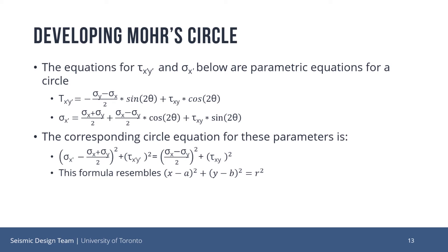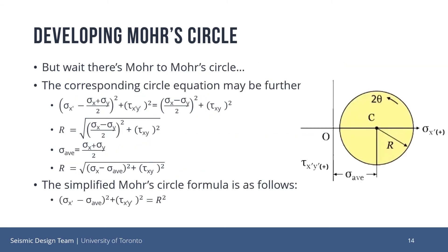I know what you might be thinking: can't we just use the equations to solve for sigma x-prime and tau xy-prime? Well, there's more to Mohr's Circle and this equation can be further simplified. The radius r may be considered as the square root of (sigma x minus sigma y) divided by 2, squared, plus tau xy squared. We may consider (sigma x plus sigma y) divided by 2 as the average normal stress, denoted by sigma average. This means we can further simplify the radius as the square root of (sigma x minus sigma average) squared plus tau xy squared. This simplified equation for Mohr's Circle is shown: (sigma x-prime minus sigma average) squared plus tau xy-prime squared is equal to r squared. We have the values for r and sigma average, so we may graph this relationship.